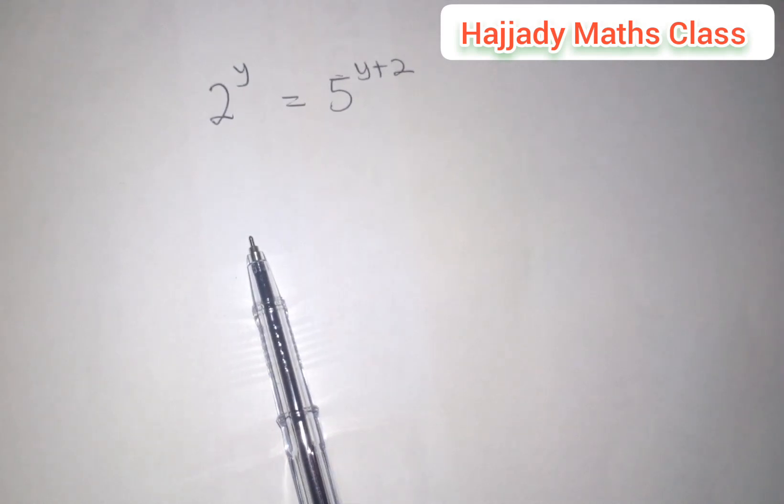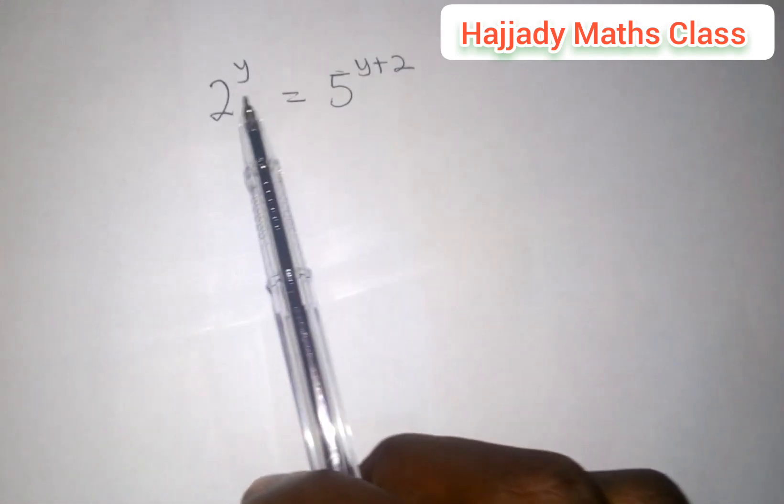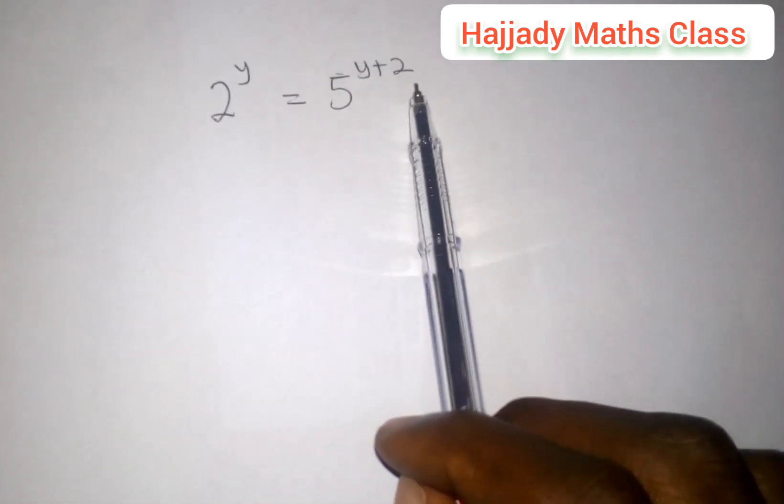Today, we'll be solving this mind-blowing Olympiad question. Here we have 2 raised to power y equals 5 raised to power y plus 2.